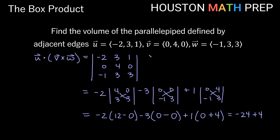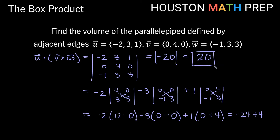We get -24 minus 0 plus 4, which gives us a box product of -20. Since we're finding a physical volume, which should not be negative, we take the absolute value of -20, which is positive 20. That is the volume of our parallelepiped.